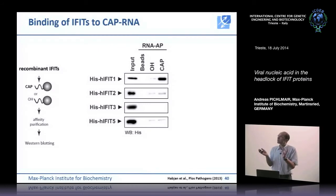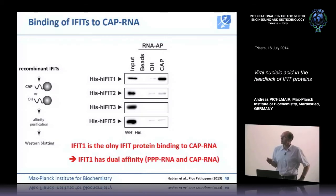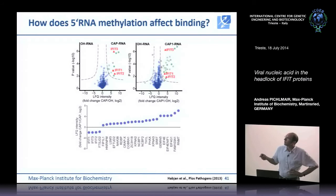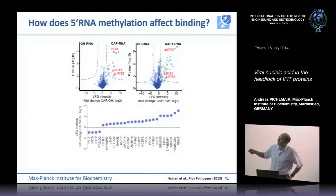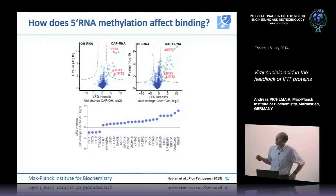We think that IFIT proteins form a complex with IFIT1 as the nucleic acid sensor. This suggests IFIT1 has two binding specificities: it can bind PPP RNA and also capped unmethylated RNA. IFIT5, in contrast, can only bind PPP RNA but not capped RNA. When comparing proteins binding better to unmethylated versus fully-methylated capped RNA, the only proteins preferring unmethylated RNA were the IFIT1/2/3 complex and the cellular 2' O methyltransferase, while all other cellular proteins show higher affinity for fully-methylated capped RNA.